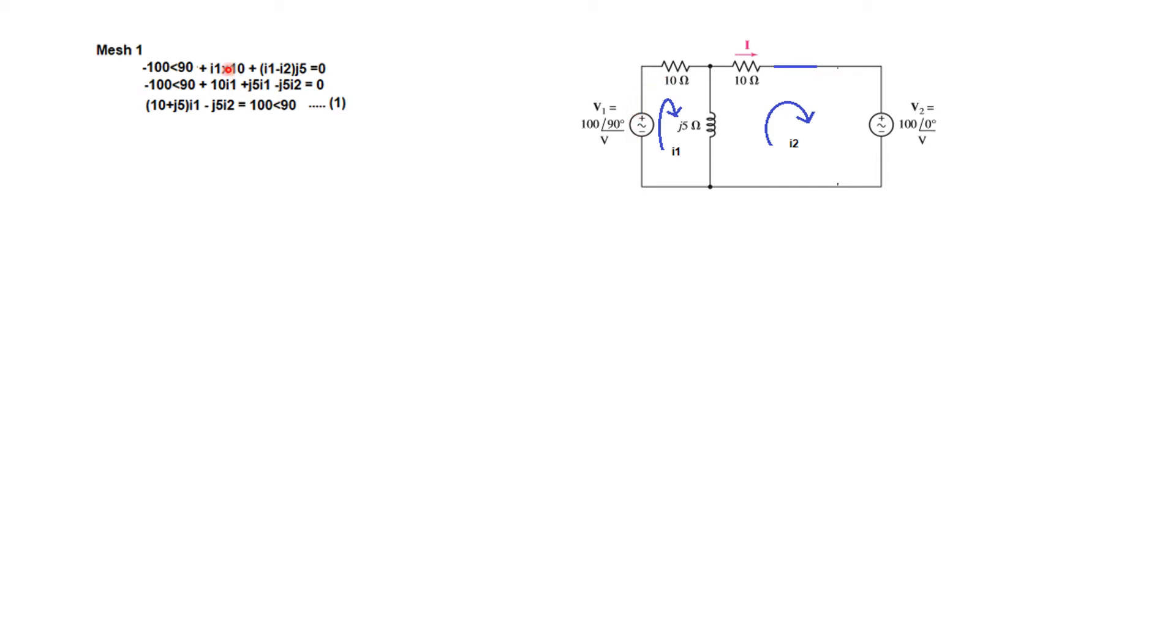We start from this corner. We have negative 190, so negative 190 multiplied by 10, so I1 into 10. And this is shared by the two, so I1 minus I2 into j5. Then we simplify, take the I1s and I2 separately. So this is the equation: (10 + j5)I1 - j5·I2 = 100∠90°. This is our first equation for mesh number one.